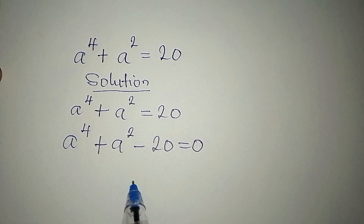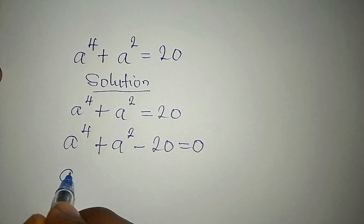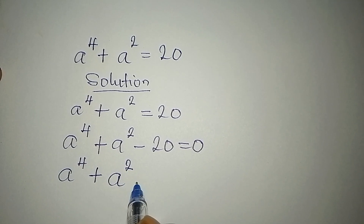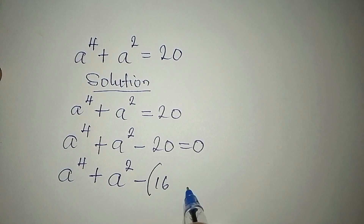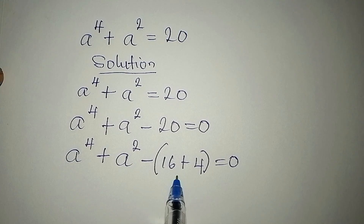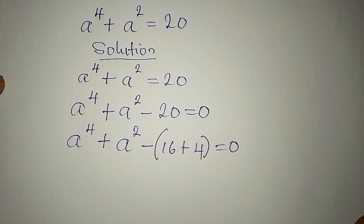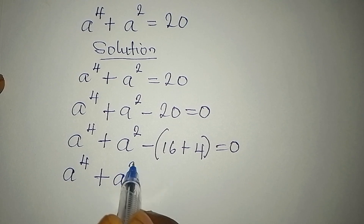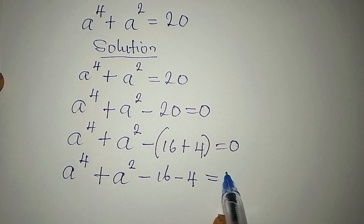The next step is to break this 20 so that we can factorize. We'll have A to the power of 4 plus A to the power of 2 minus 20, where 20 can be written as 16 plus 4, and this is equal to 0. I'm using 16 and 4 because they can be expressed in a useful form. Now let's open the bracket: A to the power of 4 plus A to the power of 2 minus 16 minus 4 equals 0.